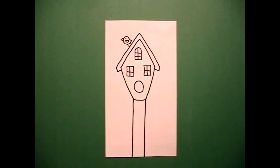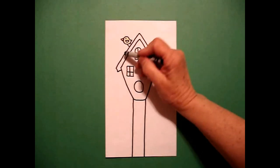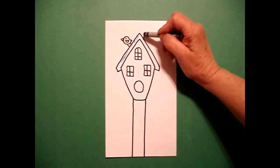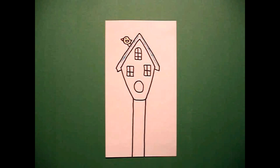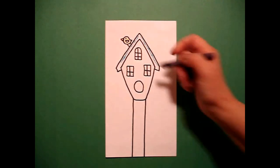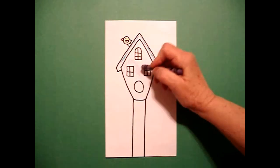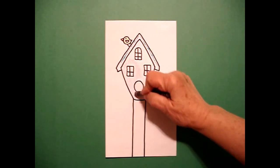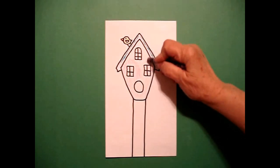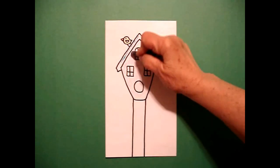You can really do this project any color you want all together. I'm going to make my little rooftop blue-green. I'm going to make the big part of my bird house a light purple. And again, you can do these any colors you want. These are just the ones that I chose.